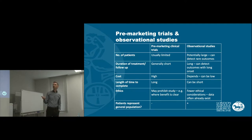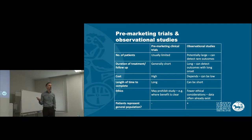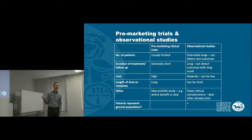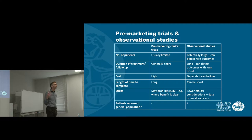If we think about the number of patients included in a study, in our pre-marketing randomised trials, it's going to be low. Whereas if we're going to do an observational study, especially if we're going to use electronic health records, then potentially we can include very large numbers of patients.